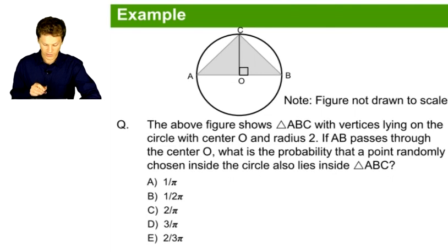The above figure shows triangle ABC with vertices lying on the circle with center O and radius 2. If AB passes through the center O, what is the probability that a point randomly chosen inside the circle also lies inside triangle ABC?